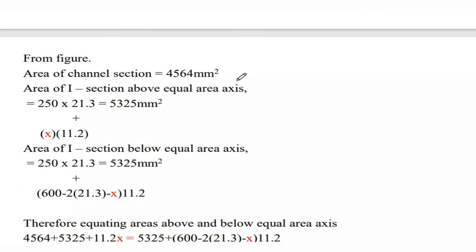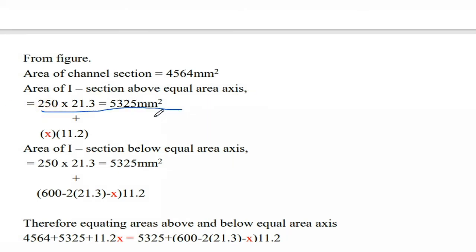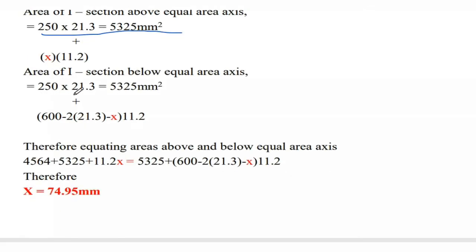Calculate the equal area axis of the built-up section. Area of channel section is 4564 mm². For the I-section: 250 × 21.3 + 325 mm² gives the equal area axis position.